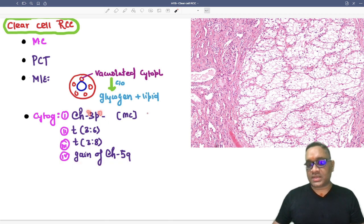So this chromosome 3P is actually VHL gene deletion, which is associated with clear cell type of RCC. Enjoy learning. Best wishes for your exams.